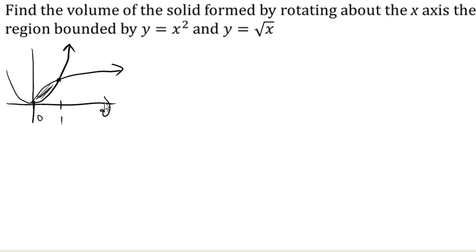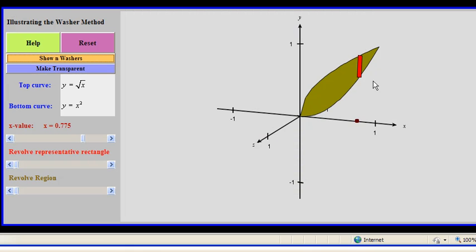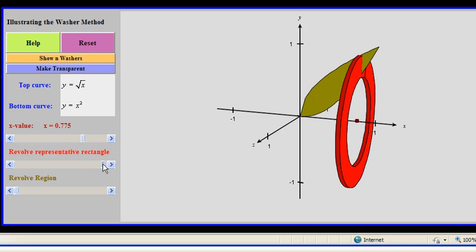We're going to rotate it around the x-axis. To get a better idea of what's going on here, let's take another look at this. So here's my y equals x squared and my y equals square root of x region. There is a representative little slice. And what we're doing is we're rotating that piece around the x-axis, and you'll notice that that's going to give us this donut shape.